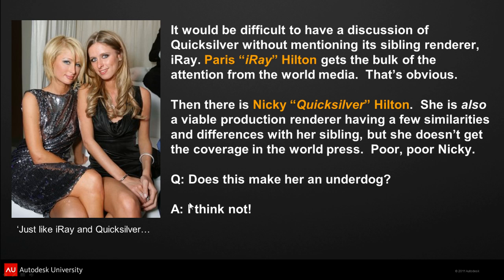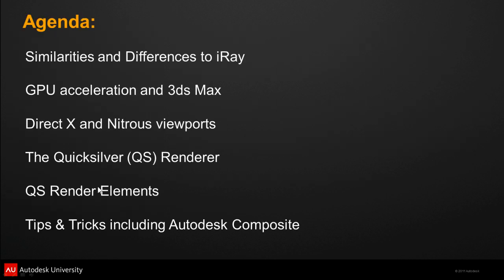This is my tongue-in-cheek way of saying we've got two new renderers available within 3ds Max — both iRay and Quicksilver — that take advantage of GPU rendering. However, one gets a lot more attention in the press, which is iRay. The focus of this class is Quicksilver, which I don't think makes it an underdog at all. There are going to be options and times when either renderer is a good choice. So let's get started.